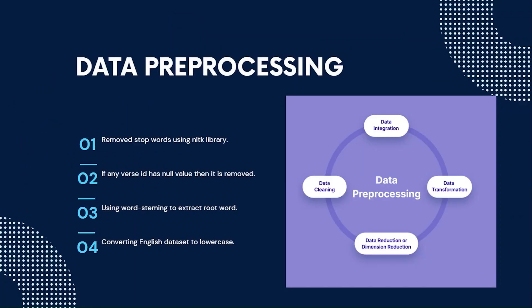After data collection, we performed data pre-processing. First, we used the NLTK library in Python to remove stopwords, and any entries with null values were also removed. Second, we used word stemming to extract root words from the text — for example, the word 'playing' becomes 'play'. Finally, we converted the English dataset to lowercase.